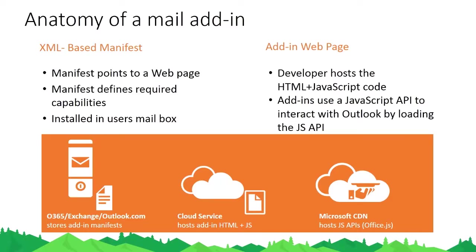What makes this special — what makes it different — is that we've also created client APIs for you to utilize, so you can access core item properties when reading or composing a message. We've done this through the exposure of Office.js, our own APIs that you can call.